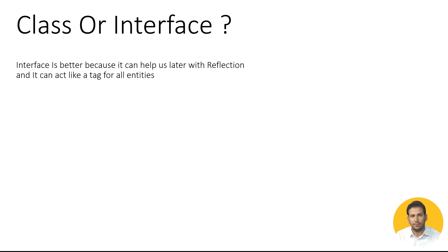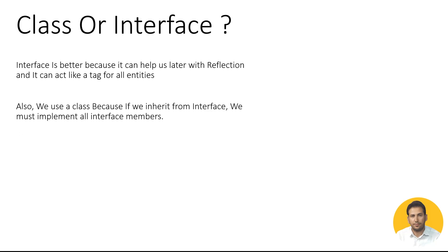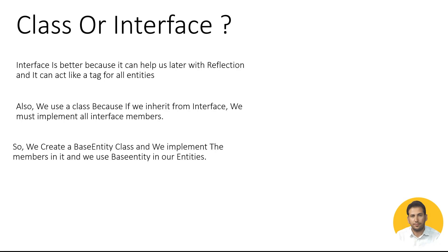In future tutorials when I implement reflections you can see how useful it is to use interfaces for this purpose. We must also use a class because when we inherit from an interface we must implement all interface members. So we will create a BaseEntity class, implement the IEntity interface members inside it, and then inherit from BaseEntity in all our entities.